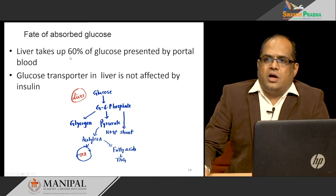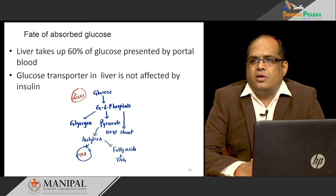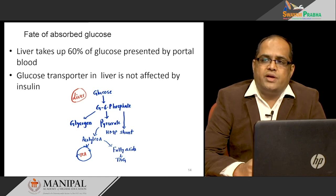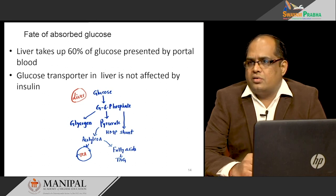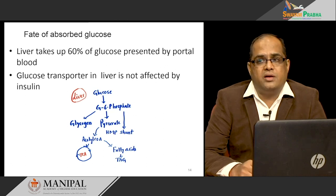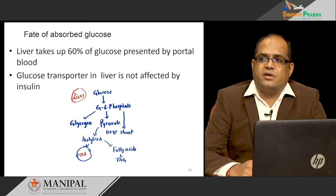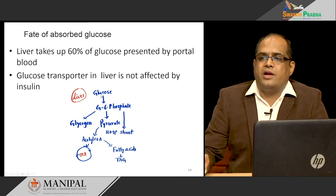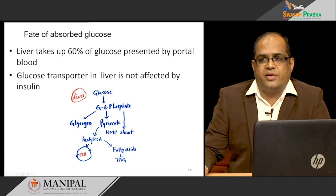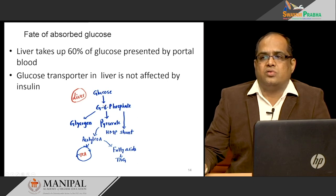Once the glucose enters into any cell, the glucose is first trapped. It is acted upon by the glucokinase or hexokinase enzyme, which puts a phosphate on it. Once the phosphate is added to the glucose, the glucose-6-phosphate that is formed cannot go out of the cell. That means that glucose is trapped in the cell and whatever further fate it has, that has to occur in the same cell. The glucose can go in and out of membranes, but not glucose-6-phosphate.